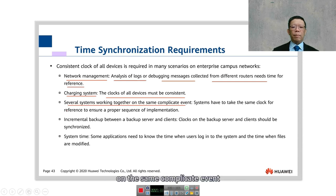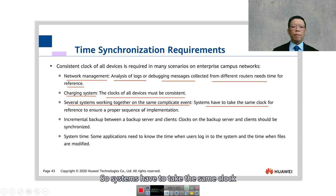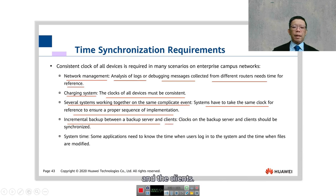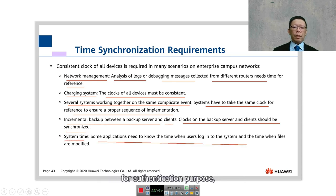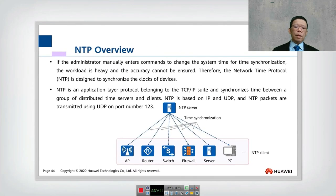When servers and systems work together in a complicated high-availability setup, the system time must be accurate so all systems use the same clock reference for proper sequencing. For example, if you are using incremental backup with DWDM between a backup server and a client, the clocks on both should be synchronized. Finally, as mentioned, for authentication purposes system time synchronization is very important for our network devices.